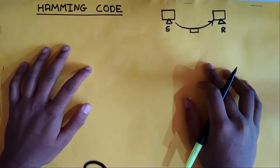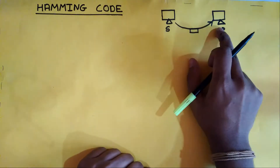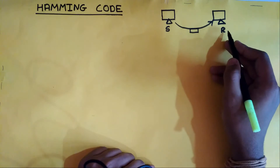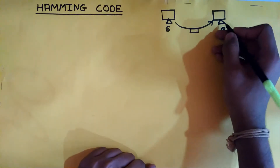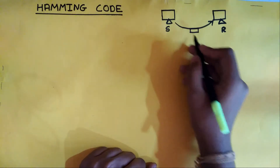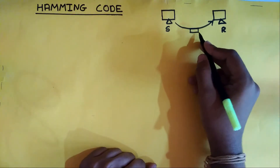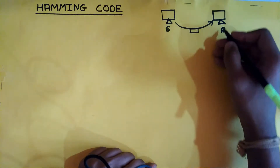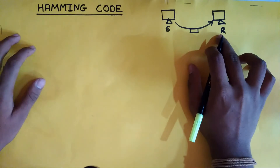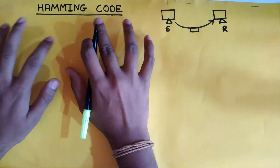Hello friends, today we are going to look at what is Hamming code. Let's just consider two parties: a sender and a receiver. If a sender sends data to a receiver, the receiver should know that the data received is the same as the data sent, because in the ongoing process there may be errors introduced in the data such as because of noise. So the receiver should contain some method to detect an error — a method known as Hamming code. Hamming code is an error detection and correction method.